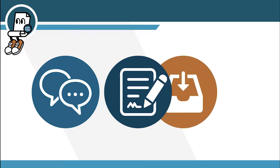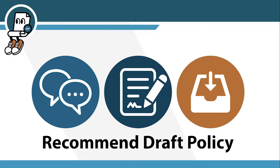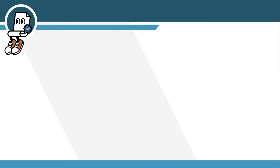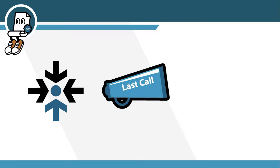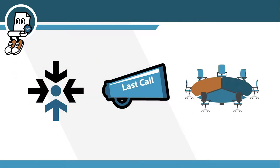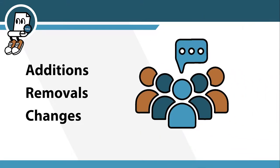Is there something you favor about the policy, or are you concerned about some element of it? After more discussion, review, and input from the community, that draft policy can become a recommended draft policy. Once a recommended draft policy is presented at an ARIN meeting, it can go to a last call period and then to the Board of Trustees for ratification. This process goes the same way for policy additions, removals, and changes — and it all starts with you, our community.